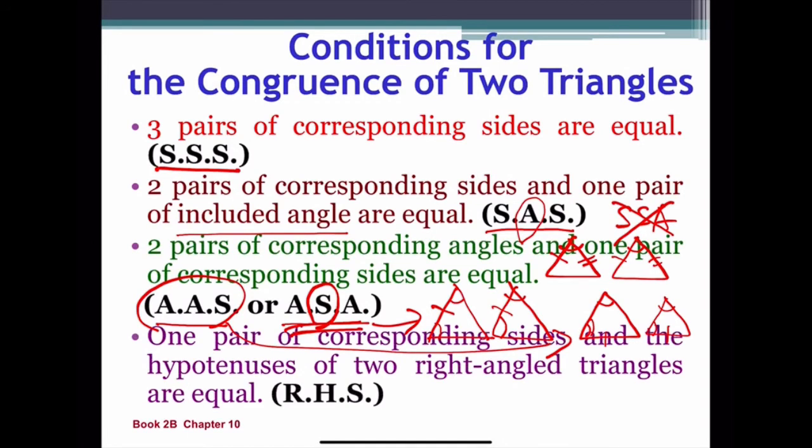Last one, RHS. That is, we have a right angle and the hypotenuse, and the last pair of sides.